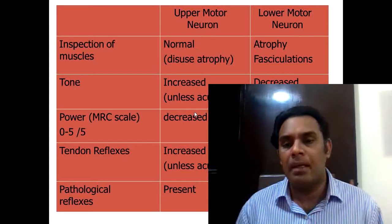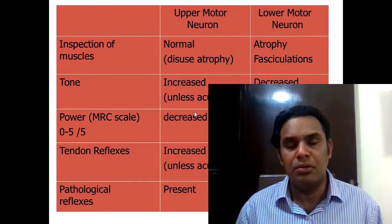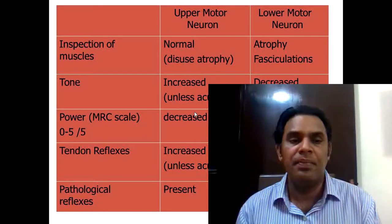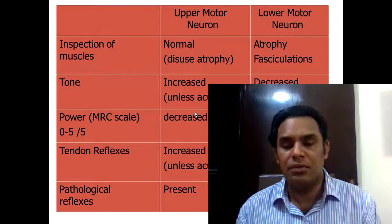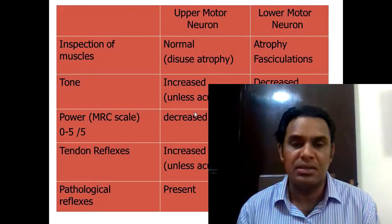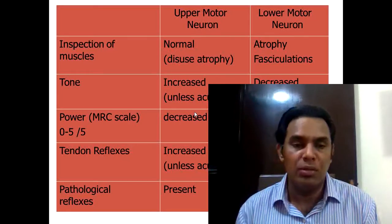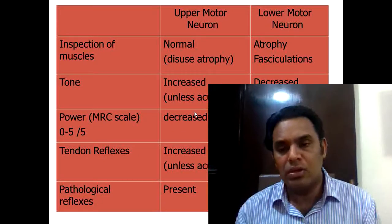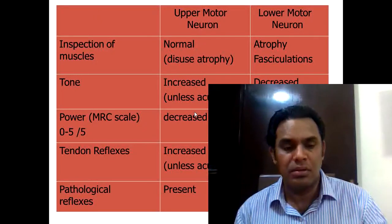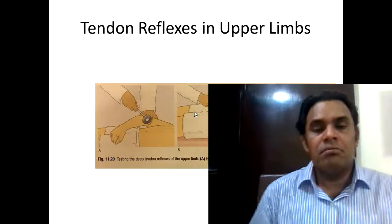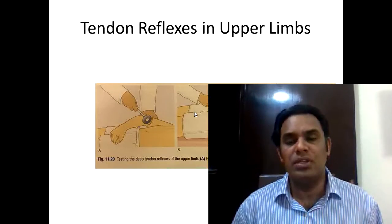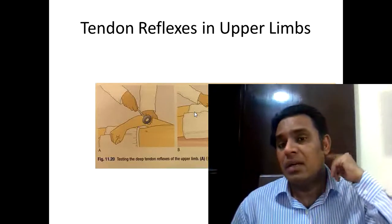Power is always decreased in both upper and lower motor neuron lesions. Reflexes in upper motor neuron lesion are always increased, while in lower motor neuron lesion they may be normal or decreased. Pathological reflexes are always present in upper motor neuron lesion but may be absent in lower motor neuron lesion. These are the key ways to assess the motor system reflexes.